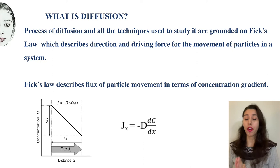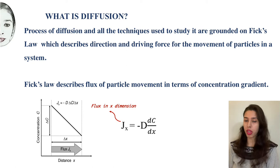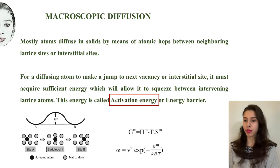All the techniques to study diffusion are grounded on Fick's law. Fick's law describes the direction and driving force for the movement of particles in a system. It describes the flux of the particle movement in terms of concentration gradient. Here in this image, Jx is the flux of particles in the x dimension, where they are moving from higher concentration to lower concentration. Flux is directly proportional to concentration gradient. D is the diffusivity coefficient, and the negative sign indicates the movement of particles from higher to lower concentration.